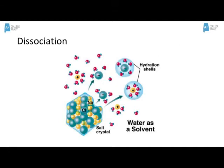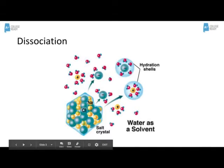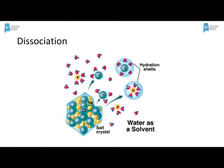We are looking at a salt crystal of sodium chloride, and water is our solvent. What happens is the ions — the sodium and the chlorine — become more attracted to the water molecules than they are to each other. So the water molecules cause them to separate, and in this case it forms what we call a hydration shell around the ions.